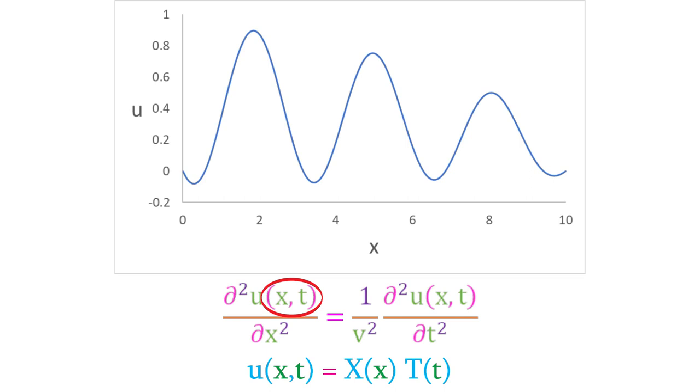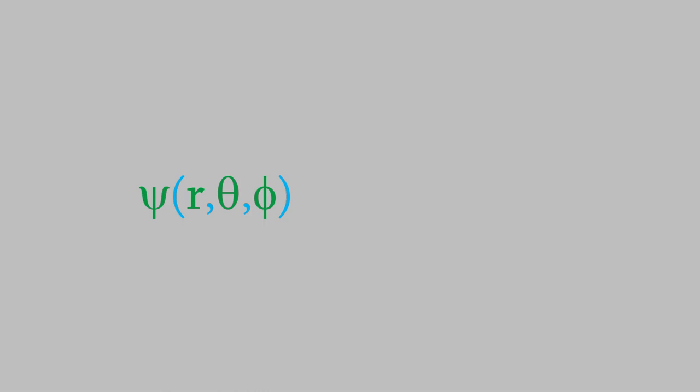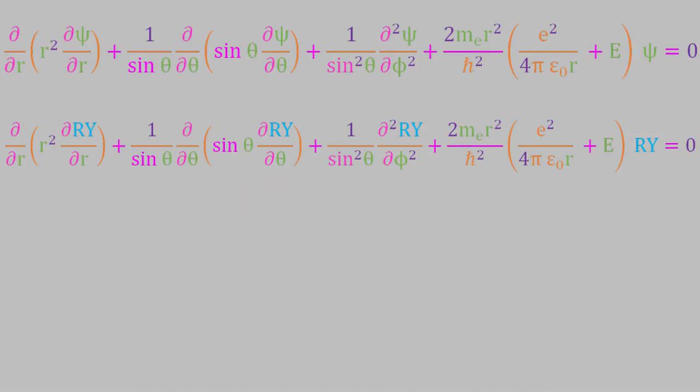Just as we saw in that earlier video, we can assume that the wave function psi, which is the expression that describes our system, can be written as the product of two simpler expressions, one of which depends only on r, and the other of which depends on the angles theta and phi. We'll call those two simpler functions capital R for the part that depends on the variable r, and capital Y for the one that depends on the angles. Now let's put that expression into our equation wherever we have the wave function psi.